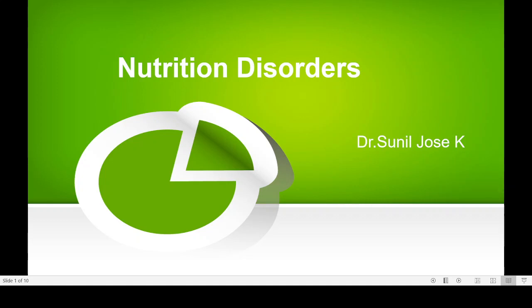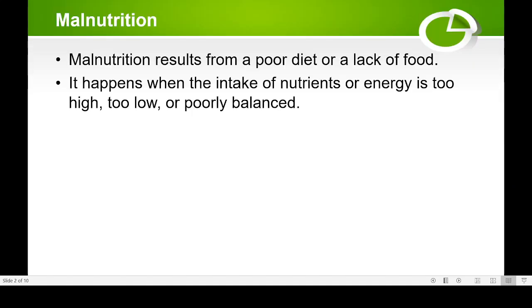About nutritional disorders, mainly in the syllabus they mention protein energy malnutrition. There are two different types of malnutrition: one is a deficiency of carbohydrate, and the other is a deficiency of protein. Malnutrition basically results from poor diet or lack of food — a person is not eating well or not getting enough food — which will result in malnutrition.